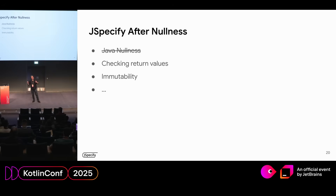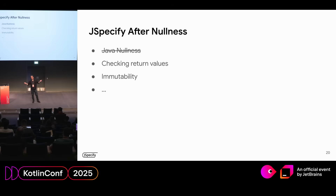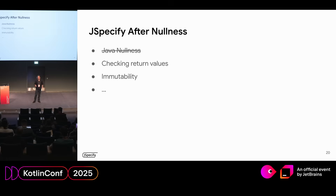JSpecify is not only about nullness. We're about all sorts of domains where static analysis is already used and already uses annotations to indicate semantics and avoid bugs. We picked nullness first — it certainly wasn't easy and it took a long time. We're going to move on to other domains. One of them is checking return values. We're also looking at immutability. We have more to do after nullness.